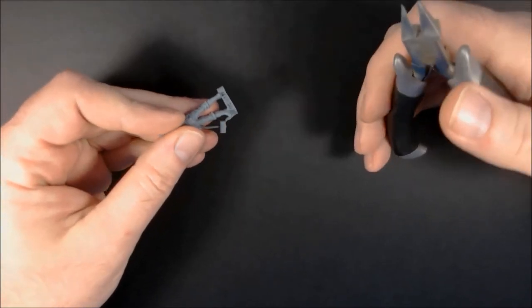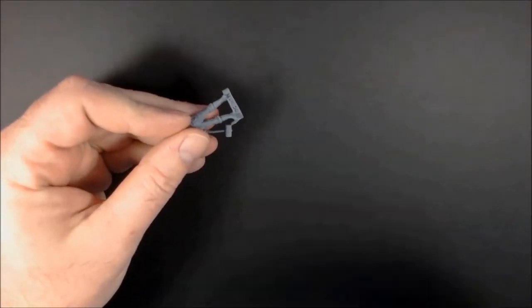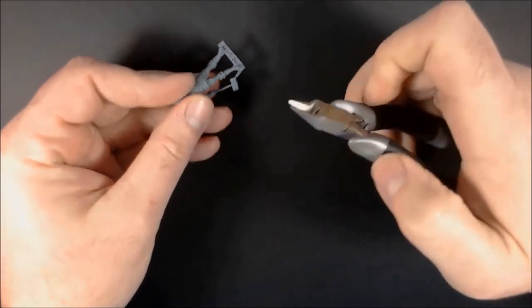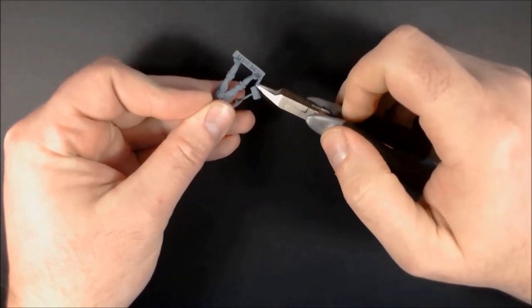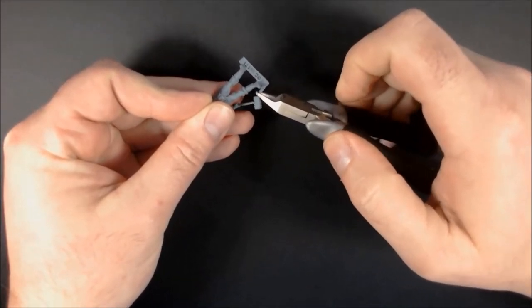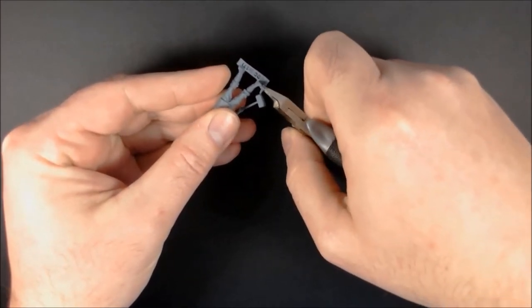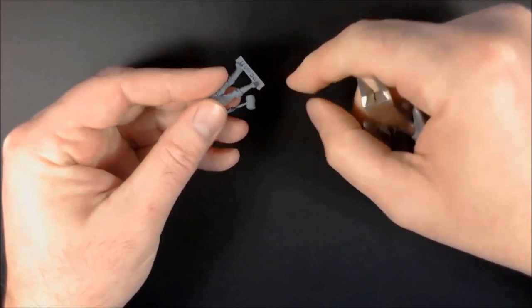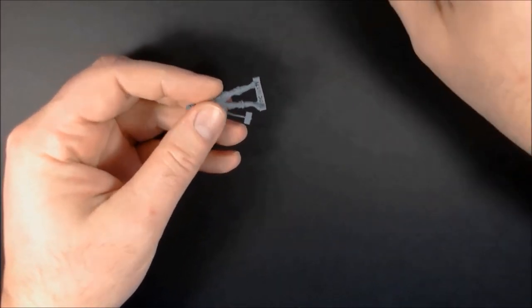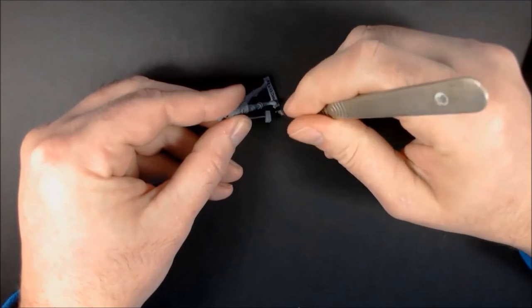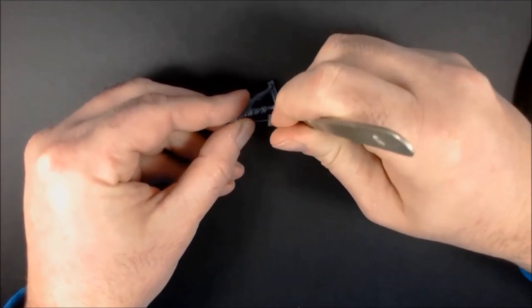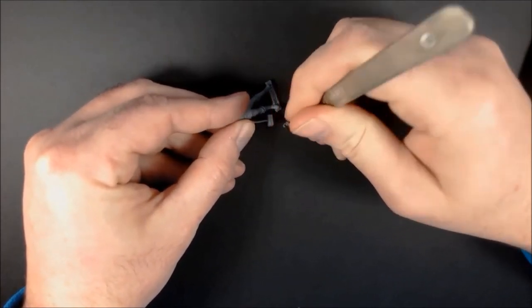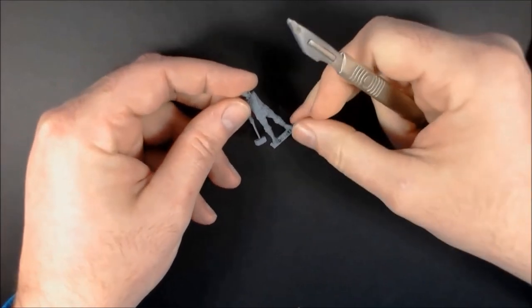So another bit you might need is a pair of clippers. These are good for getting rid of the excess plastic on your sprue. So you just give it a clip there and a clip there and you can trim off the excess with your knife then to give you a flat surface to work with.